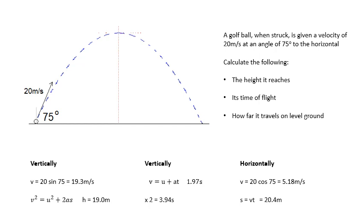So, to get the height it reaches is basically just a Suvat equation. We need to get the vertical component of the velocity, which is 20 sin 75, which is 19.3 meters per second. Then I've done v squared is u squared plus 2as, and that gives me a height of 19.0 meters.